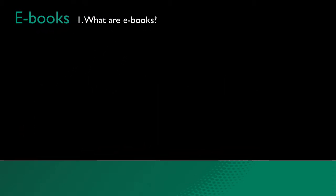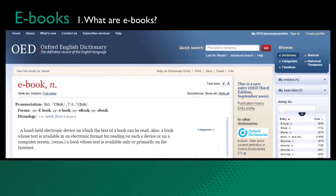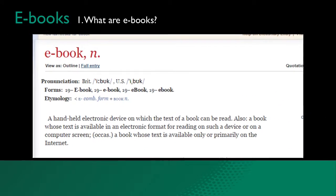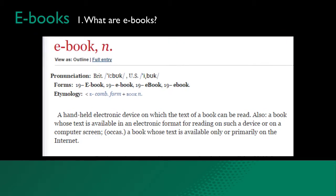Question 1: What are e-books? The Oxford English Dictionary defines an e-book or electronic book as a hand-held electronic device on which the text of a book can be read. Also, a book whose text is available in an electronic format for reading on such a device or on a computer screen. Occasionally, a book whose text is available only or primarily on the internet.